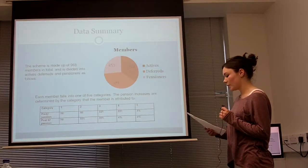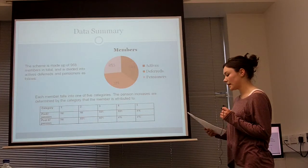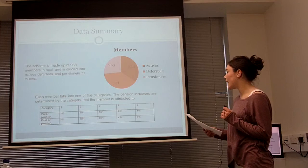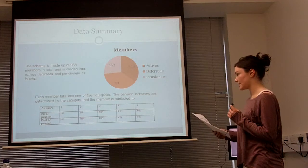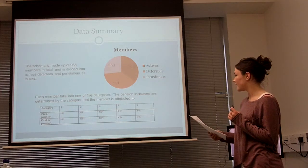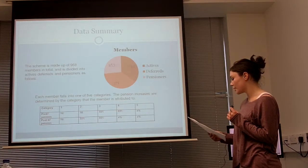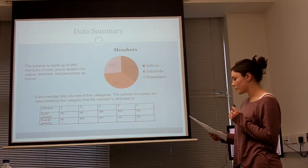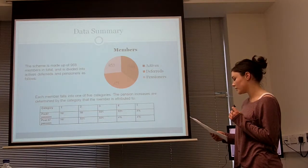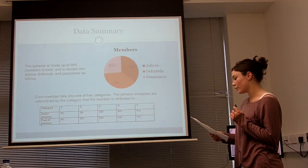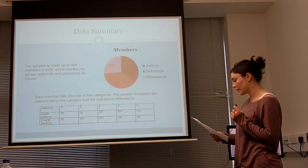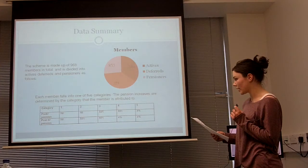Before evaluating the scheme, we compiled a data summary of all the members. The scheme is made up of 968 members in total, divided into actives, deferreds, and pensioners. The deferreds make up the largest proportion at 38% of the members, followed by actives and then pensioners. Each member also falls into one of five categories, and according to which category they're in, this will determine their pension increases.